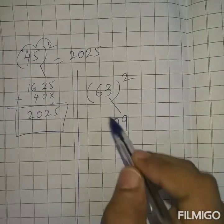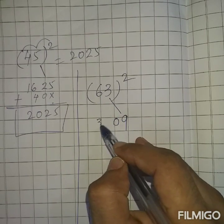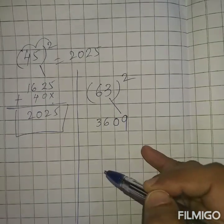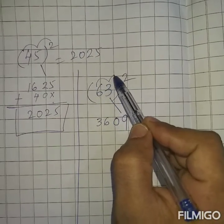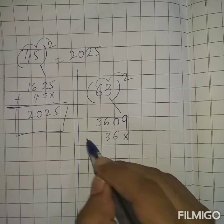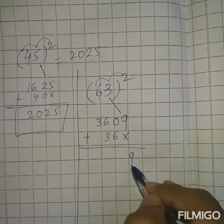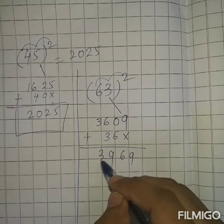Now multiplication: 6 × 3 = 18, 18 × 2 = 36. Leave one place, 36. And now do the addition: 9, 0 + 6 = 6, 6 + 3 = 9, and 3. So answer is 3969.